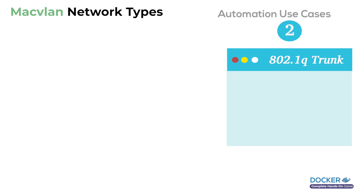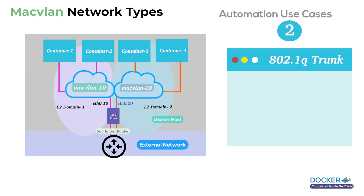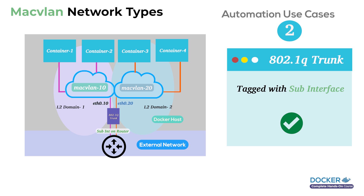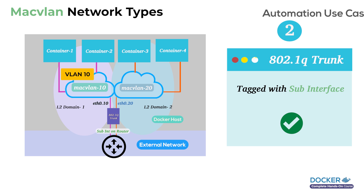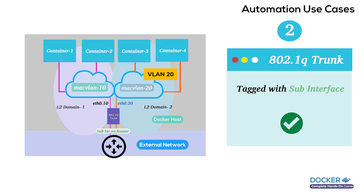In dot1q mode, you can create multiple networks or broadcast domains, and the traffic from each network would attach to a sub-interface — also referred to as dot1q tagging. As shown in this diagram, a MacVLAN 10 is created in dot1q mode, which carries traffic from the first two containers (c1 and c2), and this traffic flows through the bridge towards the host side. A sub-interface is created on the host as well as on the router to bridge this traffic. Similarly for VLAN 20 traffic, MacVLAN 20 bridges that traffic to the external network.